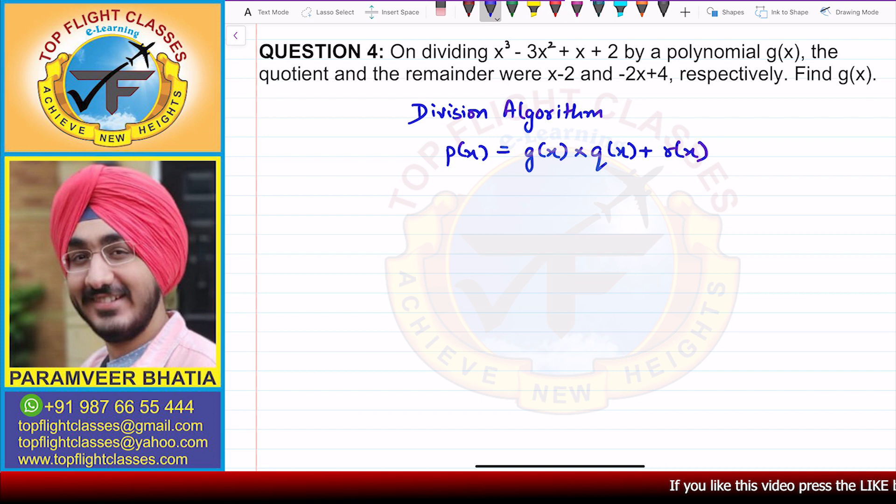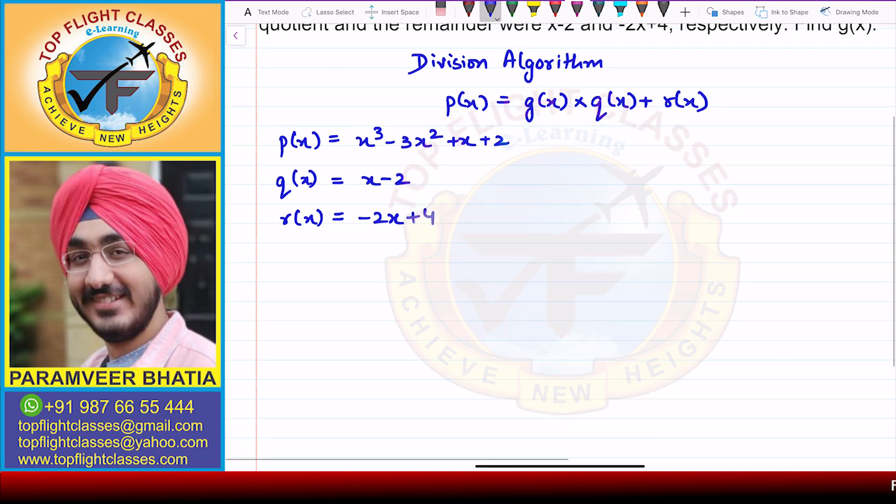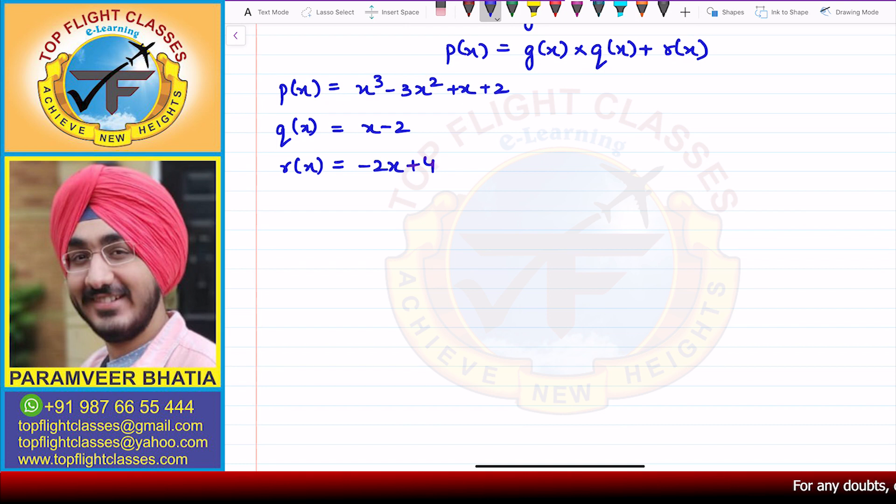Now in this question we are given that p(x) = x³ - 3x² + x + 2. When we divided this polynomial by some polynomial g(x), the quotient we got was x - 2 and the remainder was -2x + 4. So now we need to find g(x).